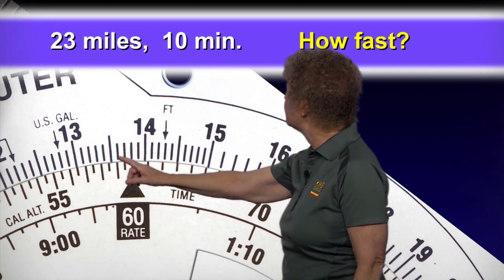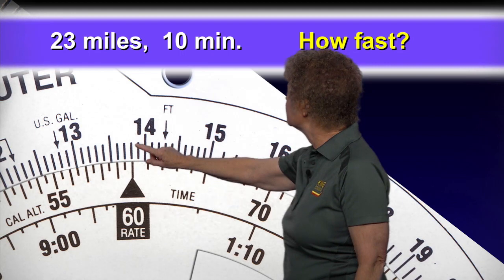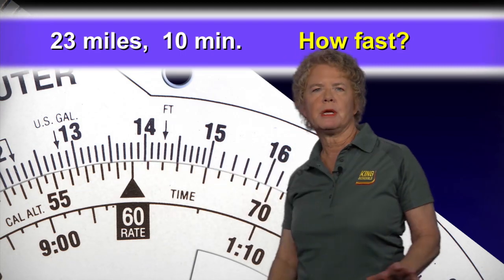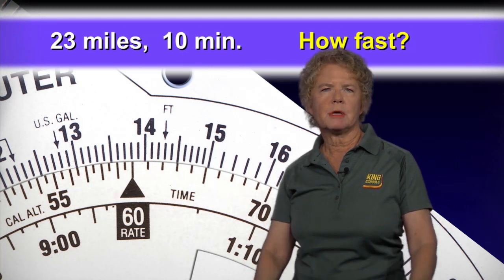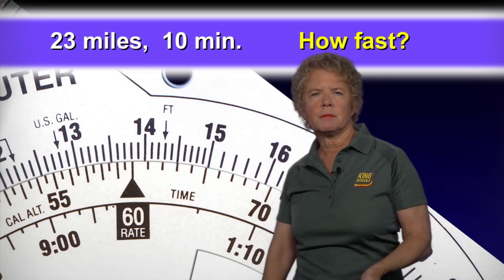And then we've got 136, 137, and the 60 is on 138. So our speed here is 138 miles every 60 minutes, or 138 miles an hour.